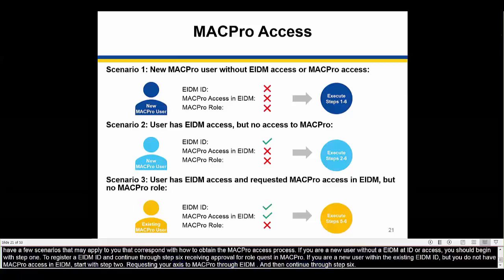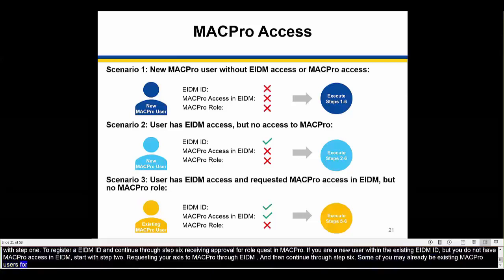Some of you may already be existing MACPro users for health home SPA or quality measures reporting. If that is the case, then you have an EIDM ID and you have approved MACPro access. You should begin at Step 5, which is requesting your additional MACPro user roles.